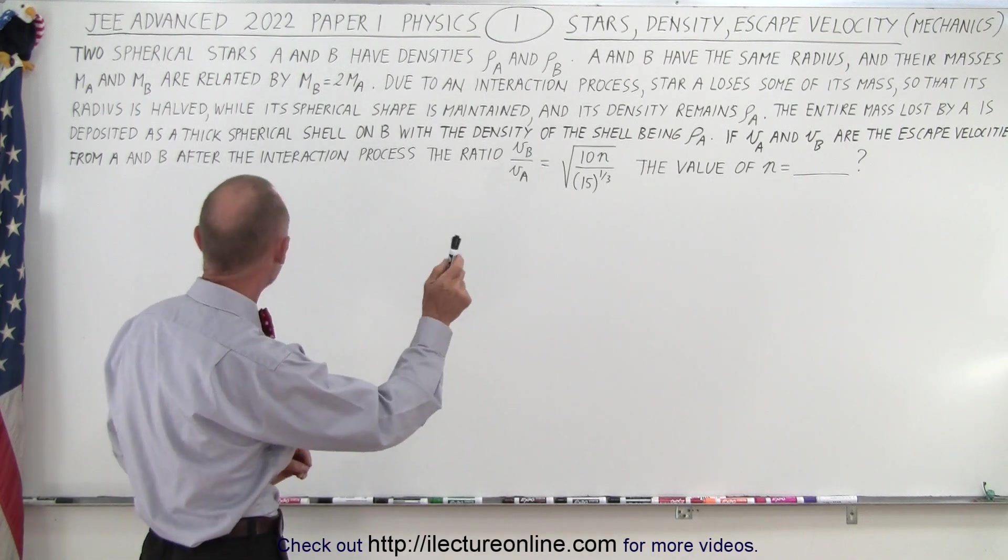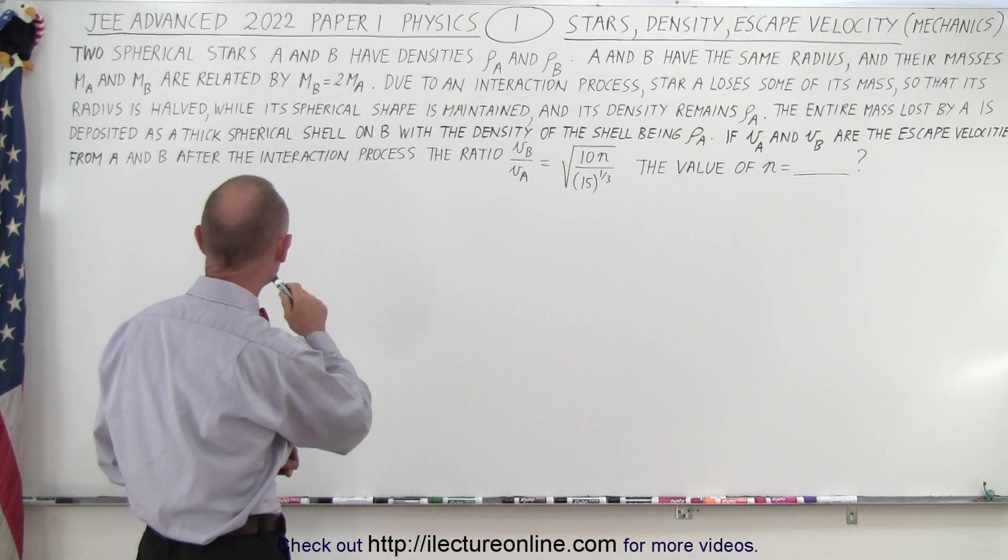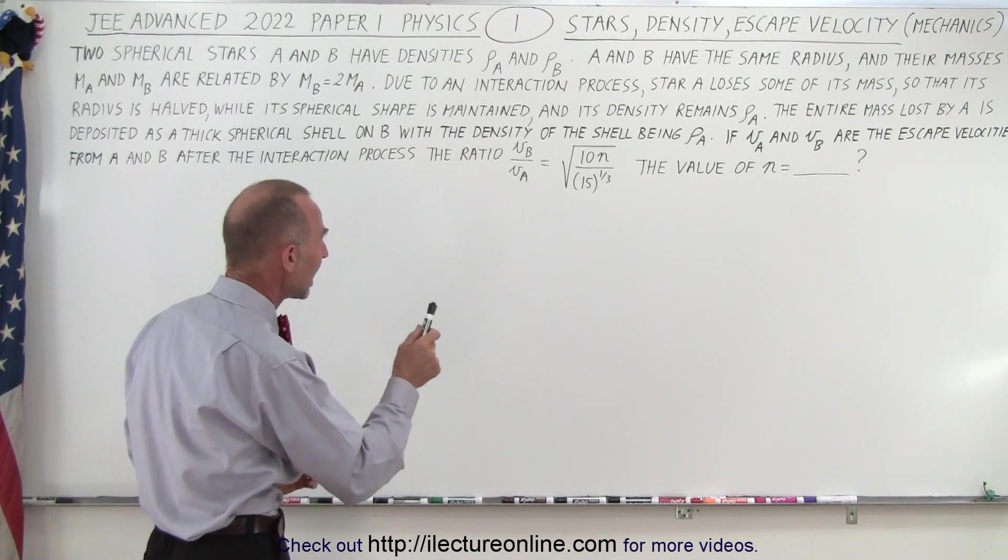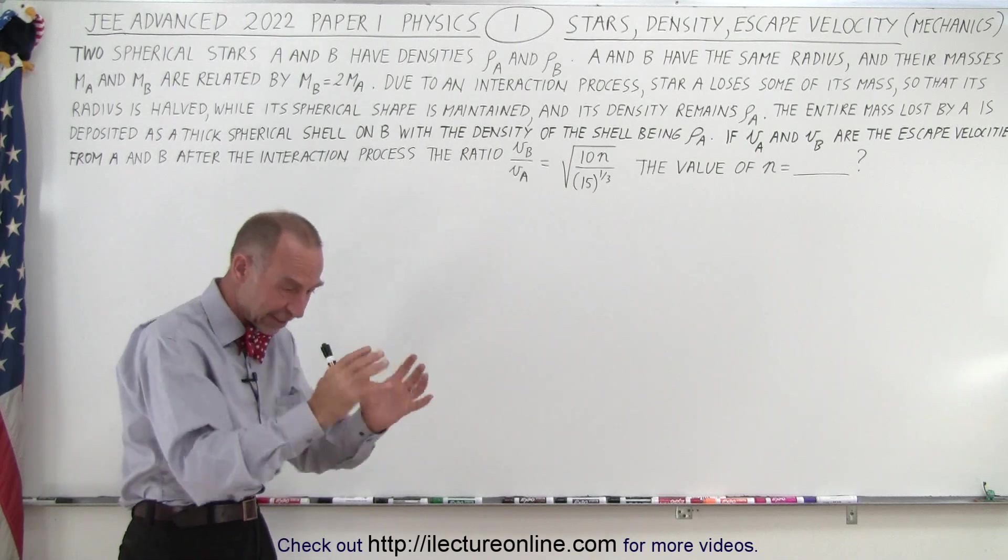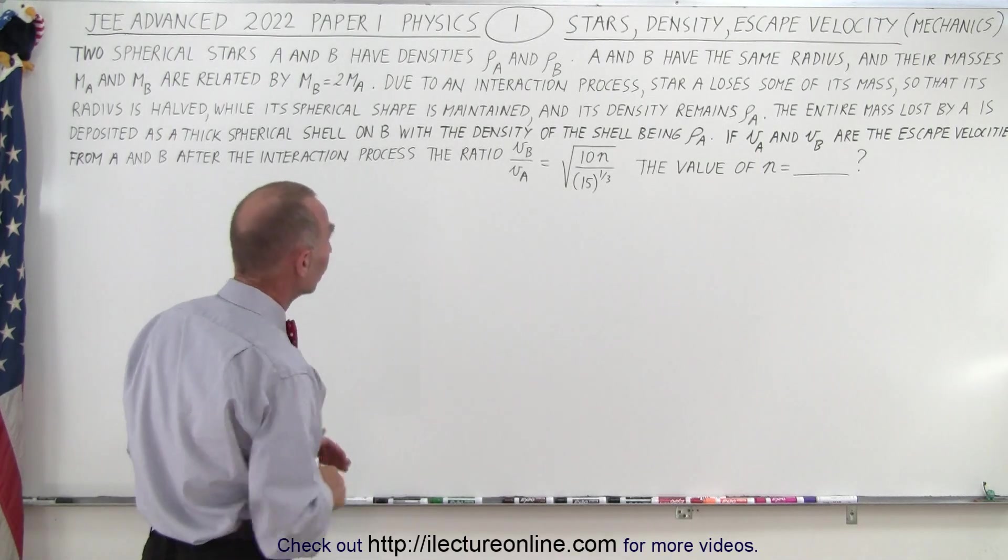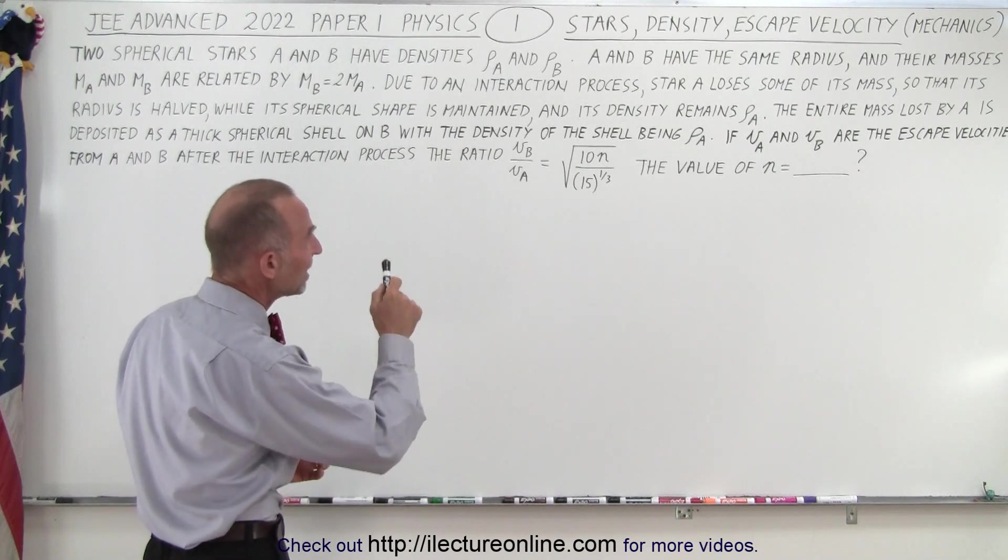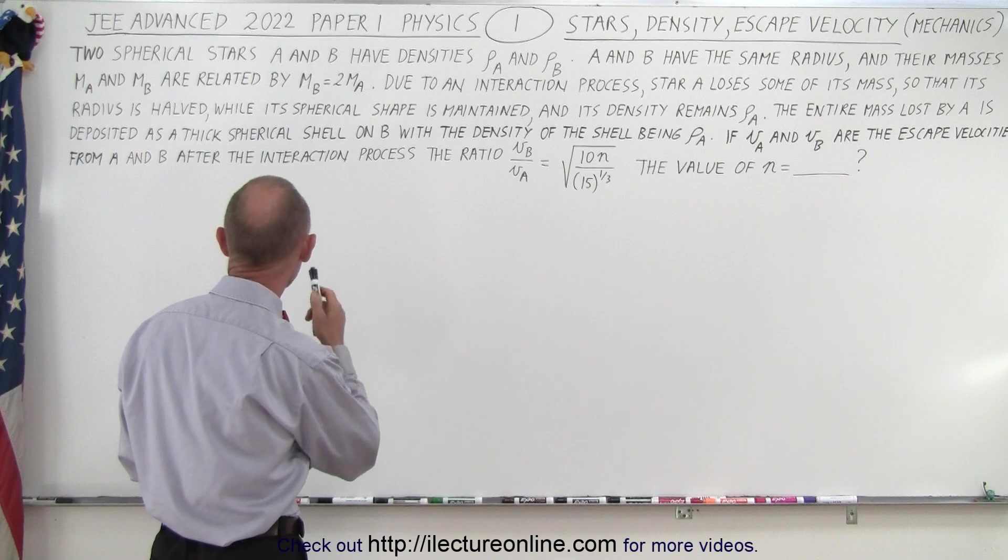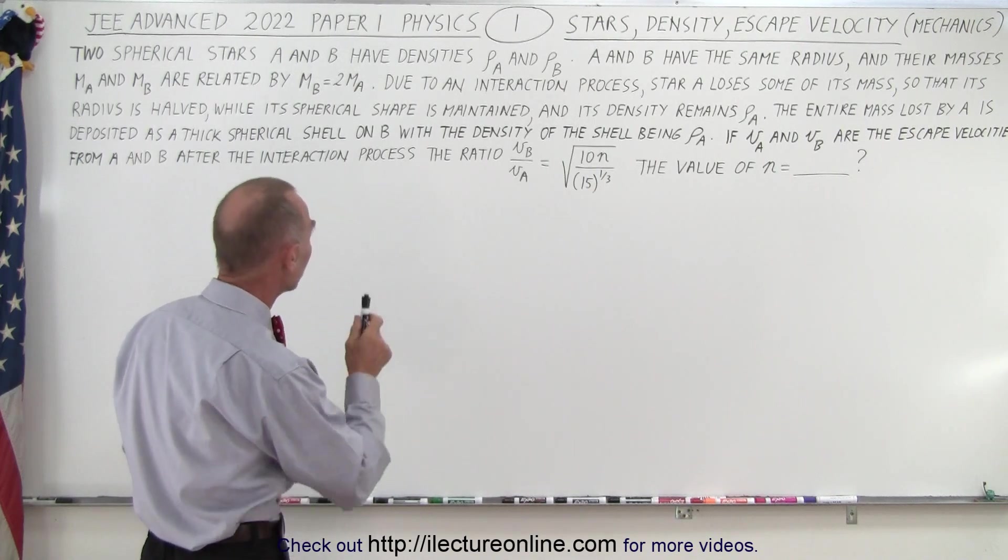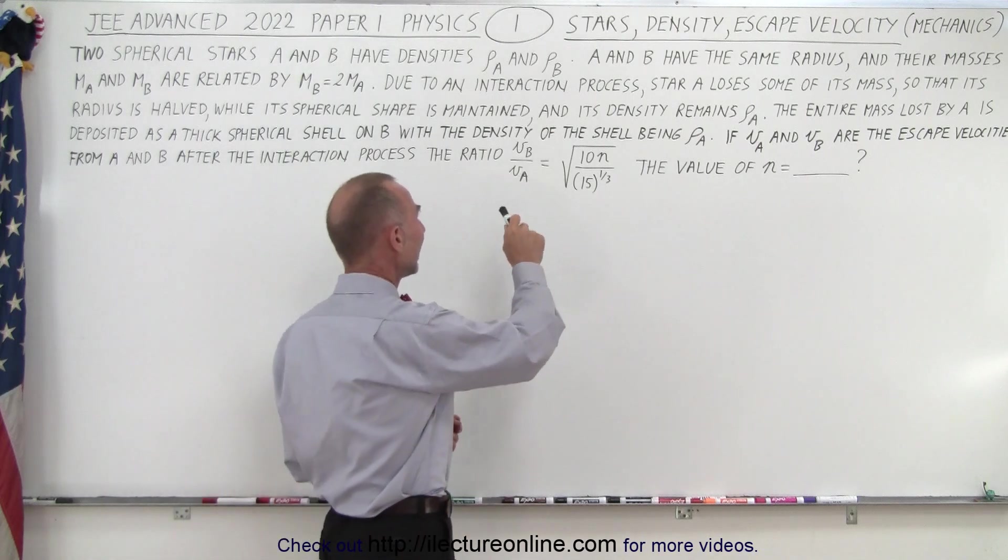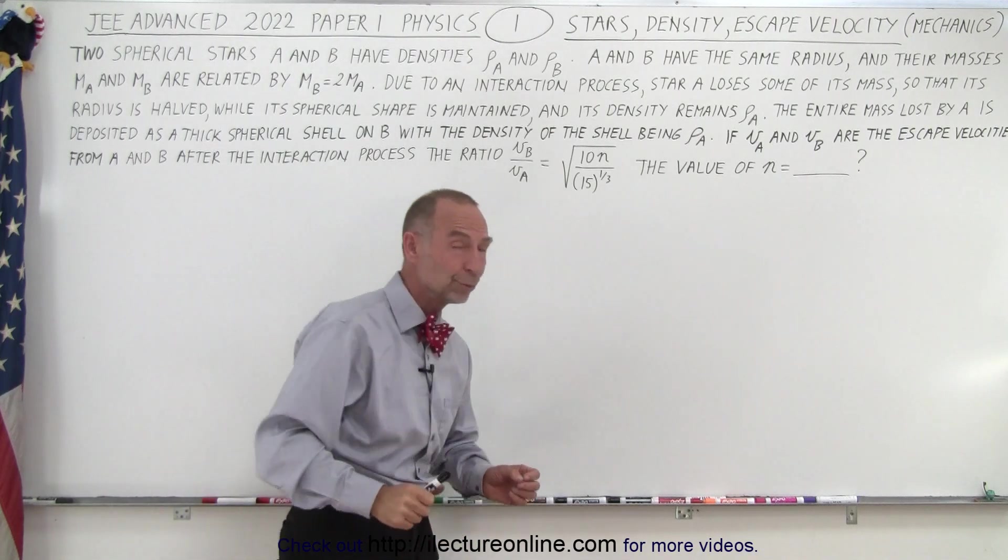The entire mass lost by A is deposited as a thick spherical shell on B, with the density of the shell being density A. And we're presuming that density B, for the inner part, still remains density B. They don't say that specifically, but you can assume that. If VA and VB are the escape velocities from A and B after the interaction process, the ratio VB/VA is equal to the square root of 10N divided by the cube root of 15.